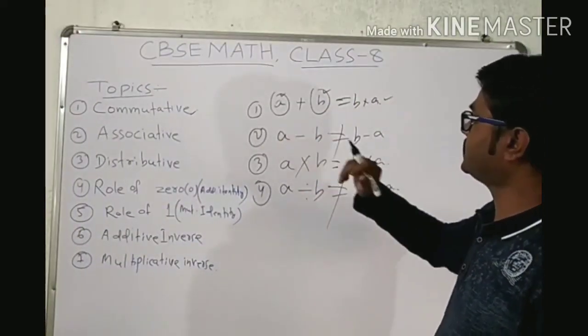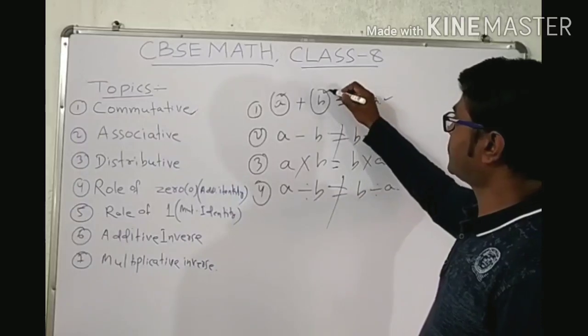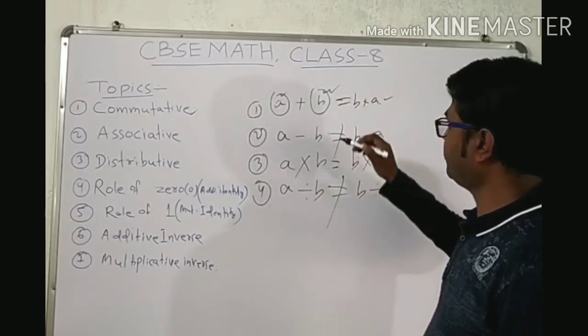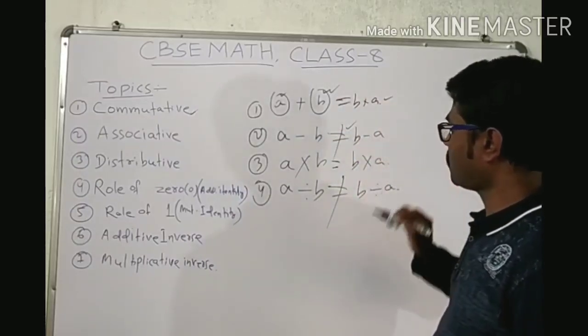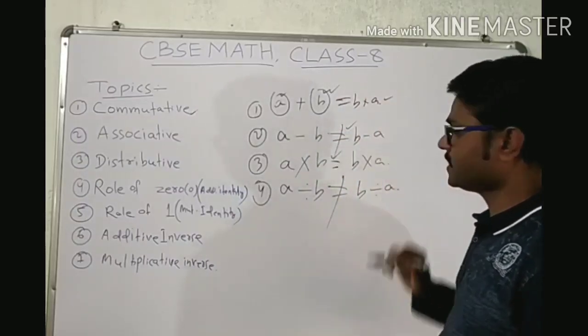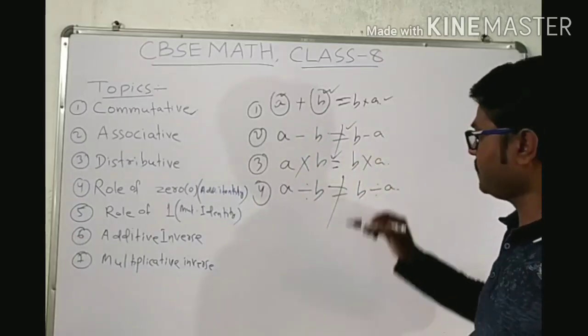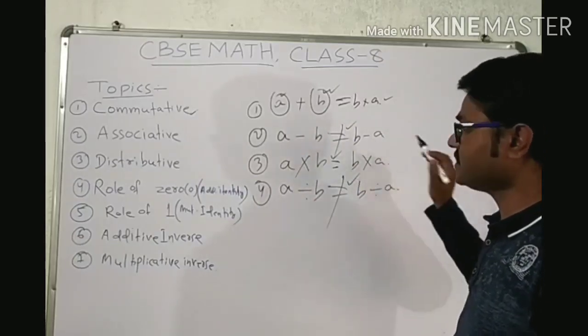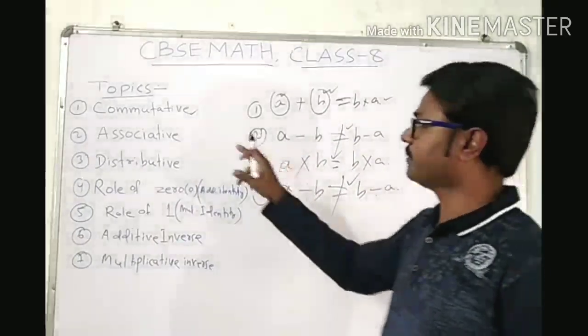So, to summarize: addition is commutative, subtraction is not commutative, multiplication is commutative, and division is not commutative for rational numbers.